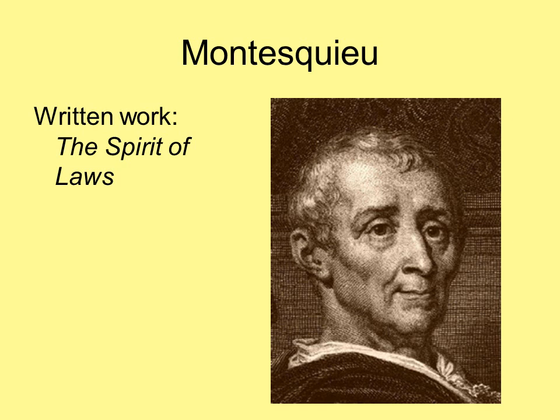Montesquieu — you can see that he's French by his name. His most famous work is called The Spirit of Laws, and he's the one who said for the very first time that the best form of government includes a separation of powers. From him we get the idea of the three branches of government — we stole that right from him. The legislative, executive, and judicial branches are separate and form a system of checks and balances so that none of them become too powerful and we never end up with a king.